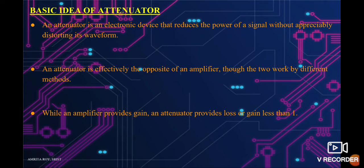Basic idea of attenuator. An attenuator is an electronic device that reduces the power of a signal without appreciably distorting its waveform. An attenuator is effectively the opposite of an amplifier, though the two work by different methods. While an amplifier provides gain, an attenuator provides loss, or gain less than one.